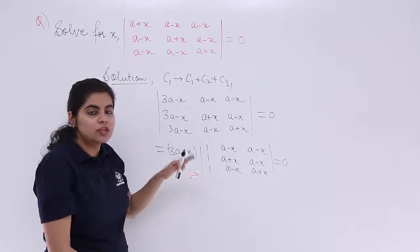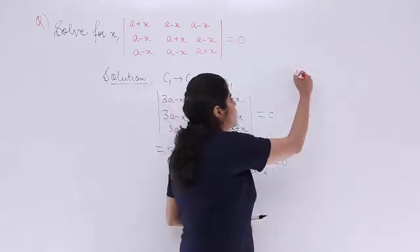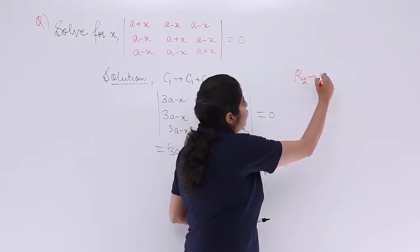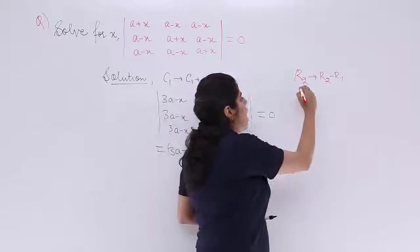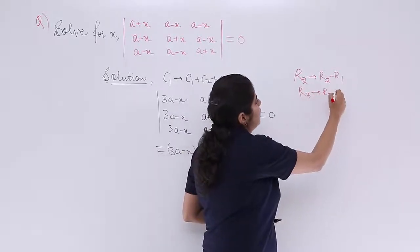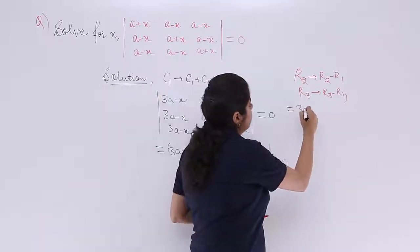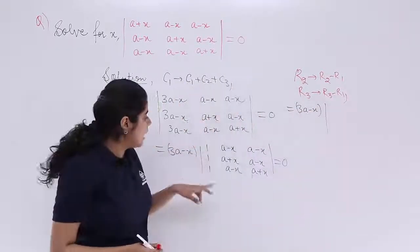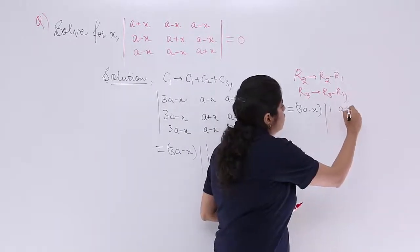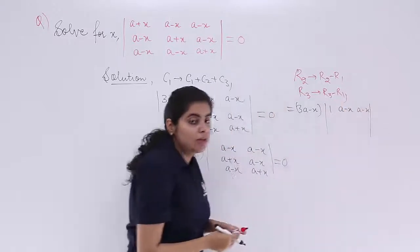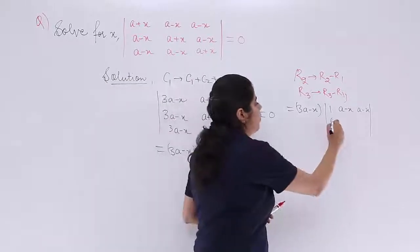I apply the operations R2 → R2 − R1 and R3 → R3 − R1. Row 1 stays the same: 1, (a − x), (a − x). In row 2: 1 − 1 = 0, and 1 − 1 = 0 for the first two entries. Row 3 similarly gets 0 and 0 in the first two entries. No change in R1.